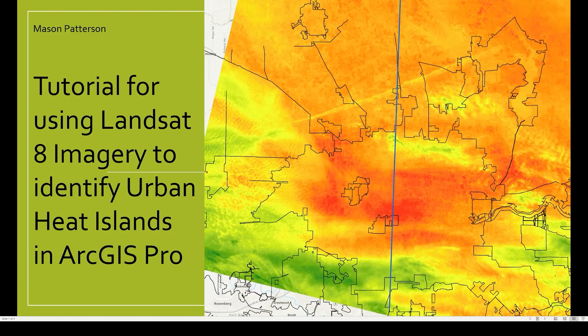Hello geographers, this is Mason Patterson. I am doing a project on behalf of the Geography 4313 environmental management class for Texas State University. This is a portion of my capstone in which I will be identifying urban heat islands in ArcGIS Pro using Landsat 8 imagery. This portion of my capstone is to serve as a public tutorial for construction of the maps I will be using in my written analysis of the urban heat island effect in San Antonio across the past 20 years.